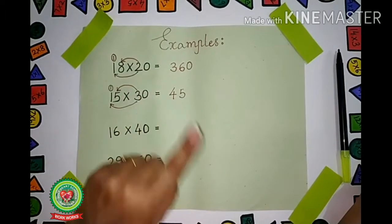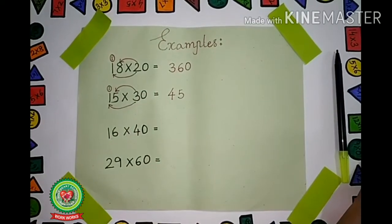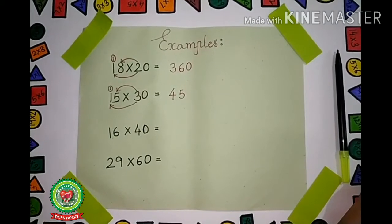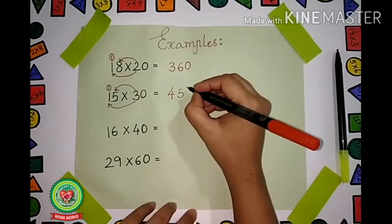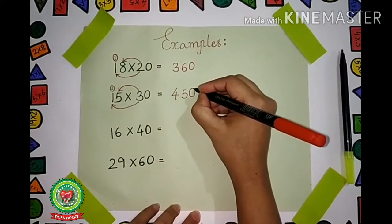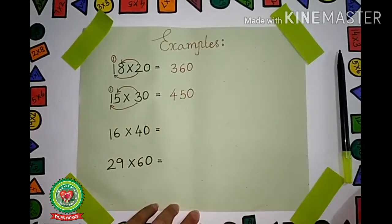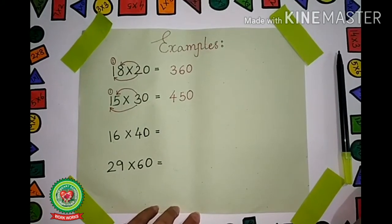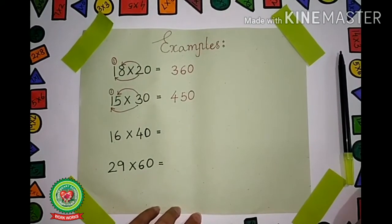Now remove your finger. What can you see? There is a 0. So we will put the 0. Our answer is 450. In the same way, look at the third example.